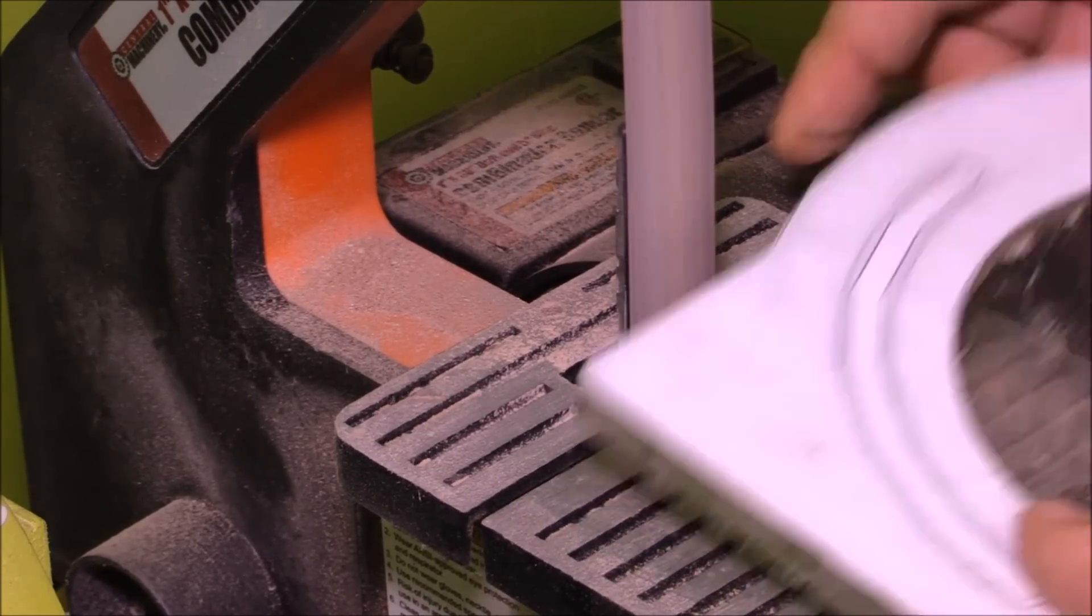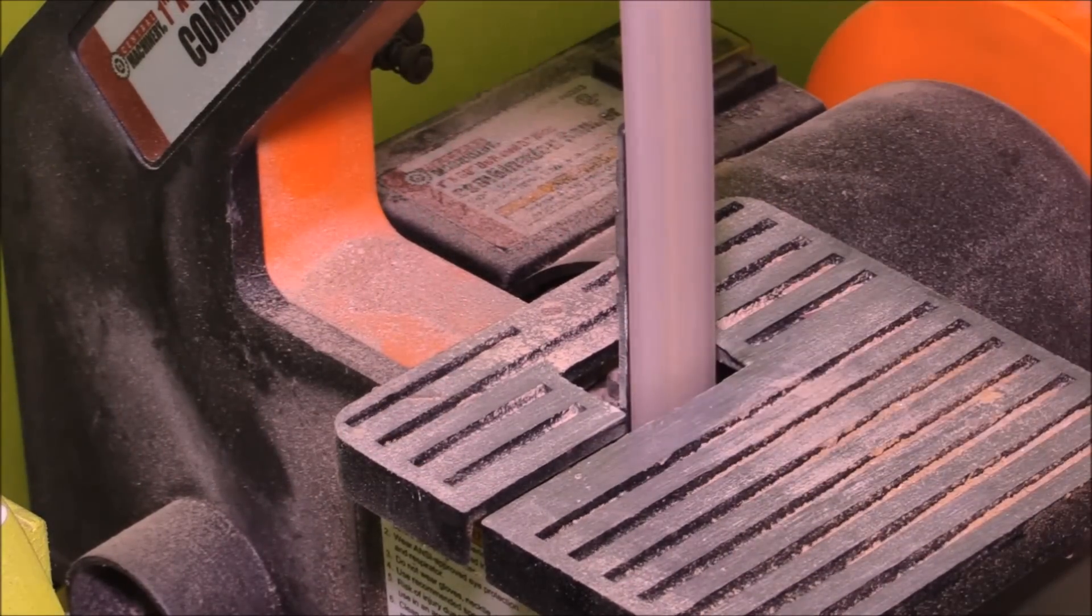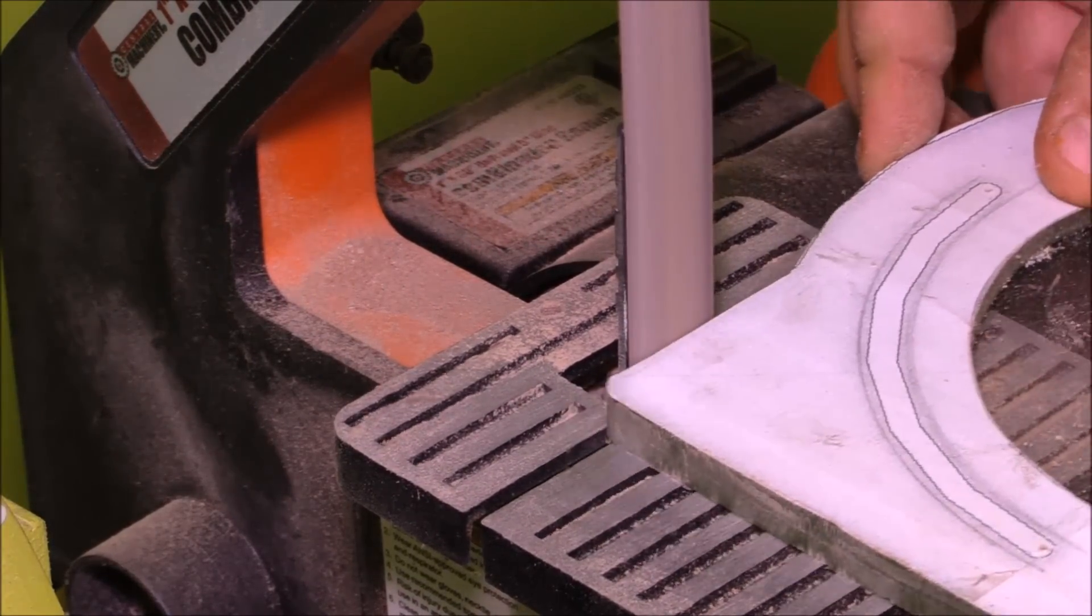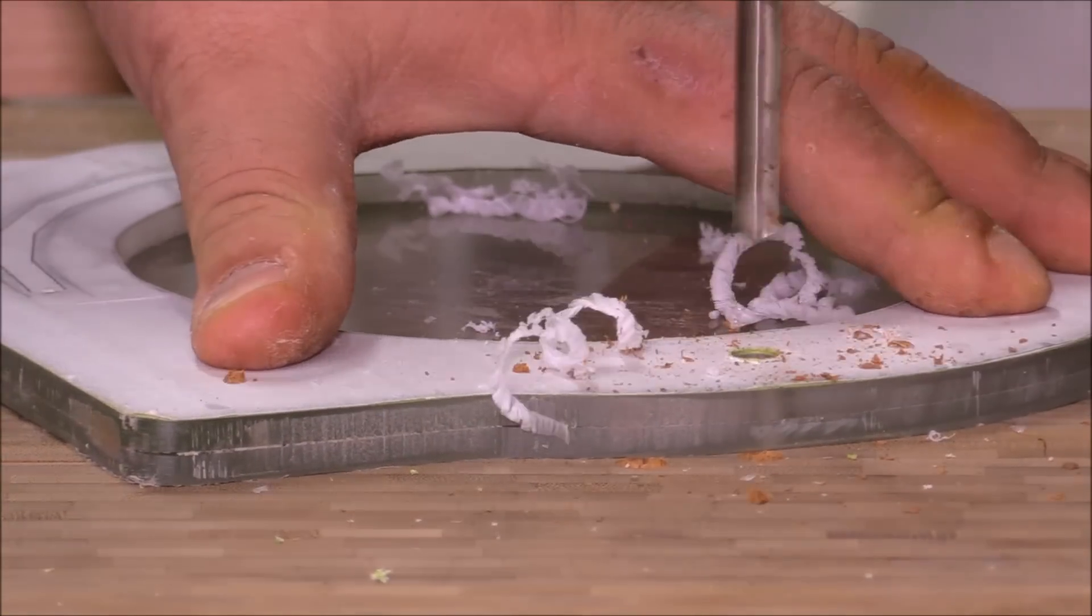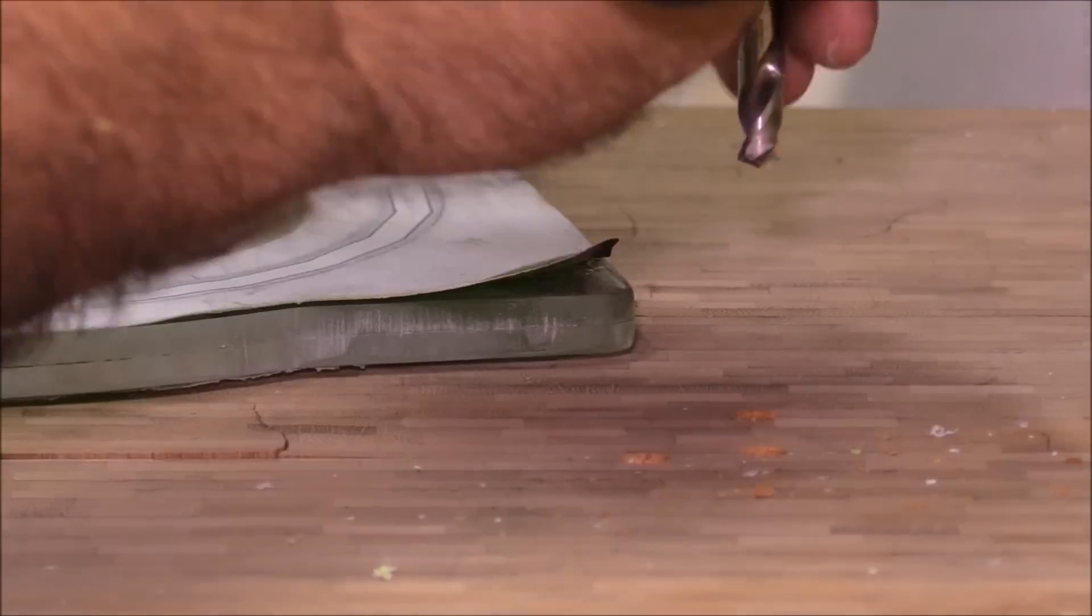I cut out the rough shape and then kind of sanded most of the big heavy marks out on the disc sander and then the one inch belt sander. Then I took it over to the drill press.